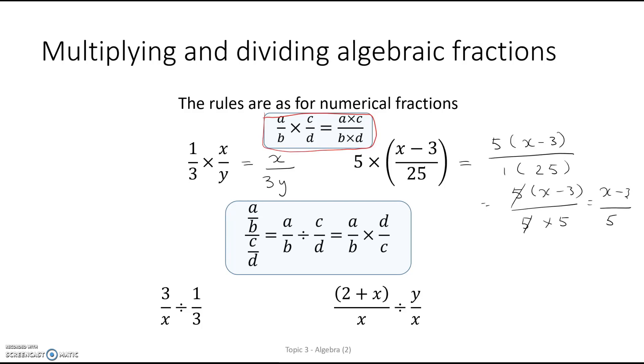Now division, we know the rule that we're going to flip and multiply. So that's going to become 3 over x times 3 over 1. Now we can just multiply. Top times top is 9. Bottom times bottom is x.